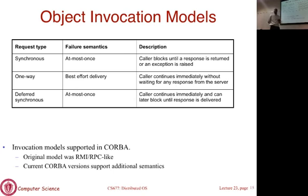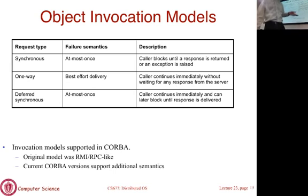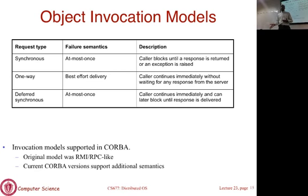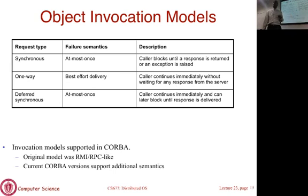One more slide on CORBA's flexibility: just as we discussed with RPCs, CORBA supports synchronous RMI, one-way RMI, and different asynchronous modes. When you make an RMI call you can specify which type — typically synchronous blocking as default — but you can also do one-way calls, asynchronous deferred, and so on.